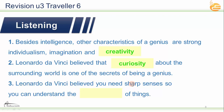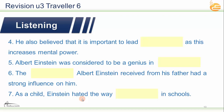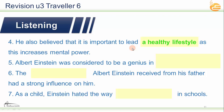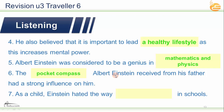Also for Leonardo da Vinci, he believed you need sharp senses so you can understand the nature of things. And also for four, he believed that it is important to lead a healthy lifestyle as this increases mental power. And for five, Albert Einstein was considered to be a genius in mathematics and physics. And for number six, the pocket compass that was given by his father had a strong influence on him. And for seven, as a child, Einstein hated the way math was taught in schools.